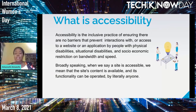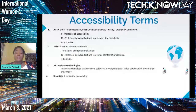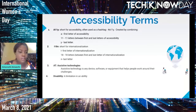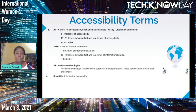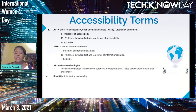Let's talk about some accessibility terms we may come across. First is a11y. a11y is a short form of 'accessibility.' You'll often see it on social media as hashtag a11y. It's created by combining the first letter 'a', then 11 which stands for the 11 letters between the first and last letter of accessibility, and 'y' which is the last letter of accessibility.